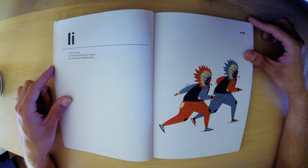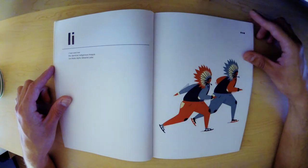I. Ivan and Ivor, the identical indigenous Iroquois, ice skate idyllic Idyllwild Lake.